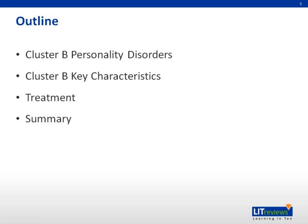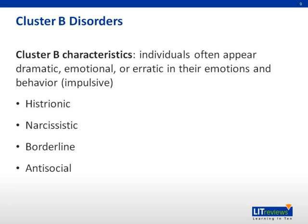Some of the cluster B characteristics include appearing dramatic, emotional, and erratic in their behavior. Cluster B disorders include the following types: histrionic, narcissistic, borderline, and antisocial. This is a categorical approach; however, an individual diagnosed with a personality disorder may have an additional personality disorder from a different cluster.